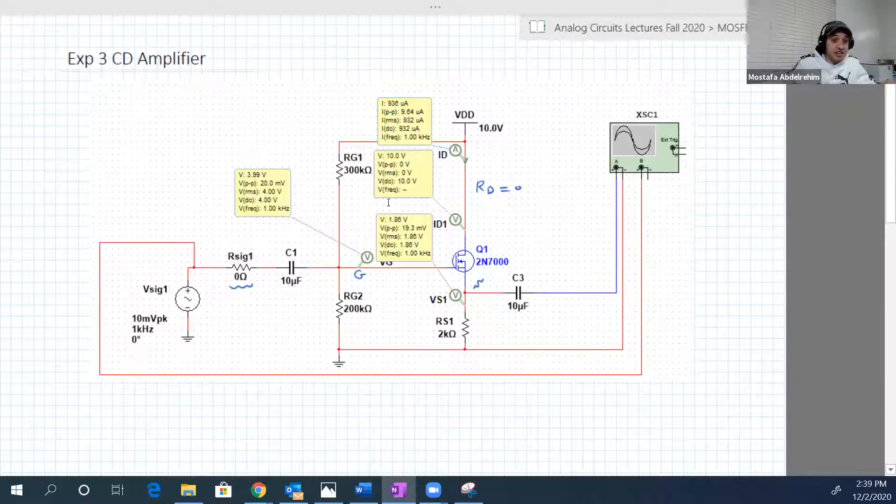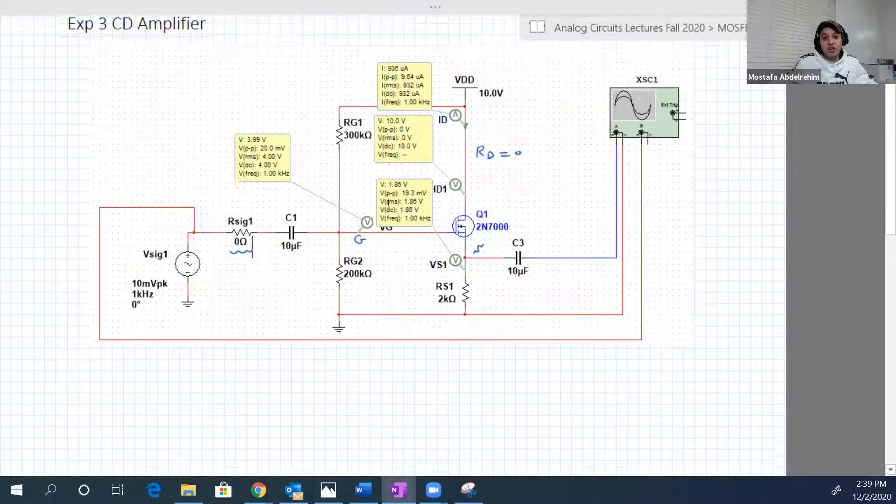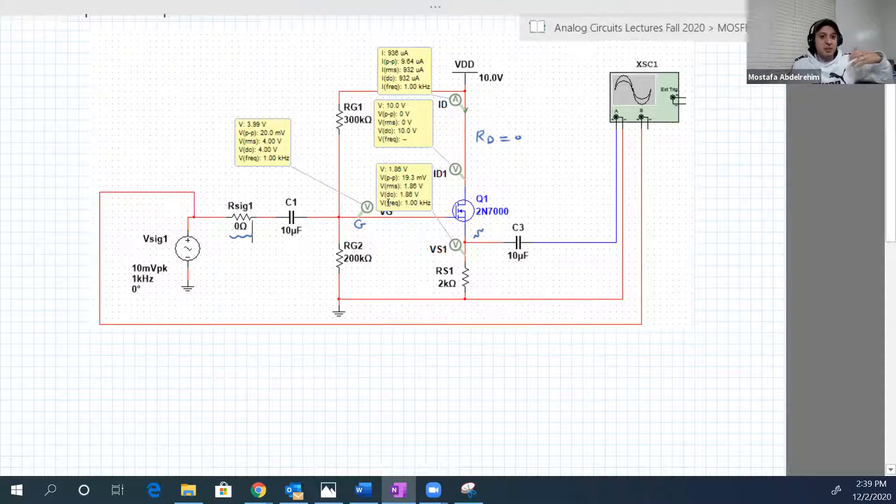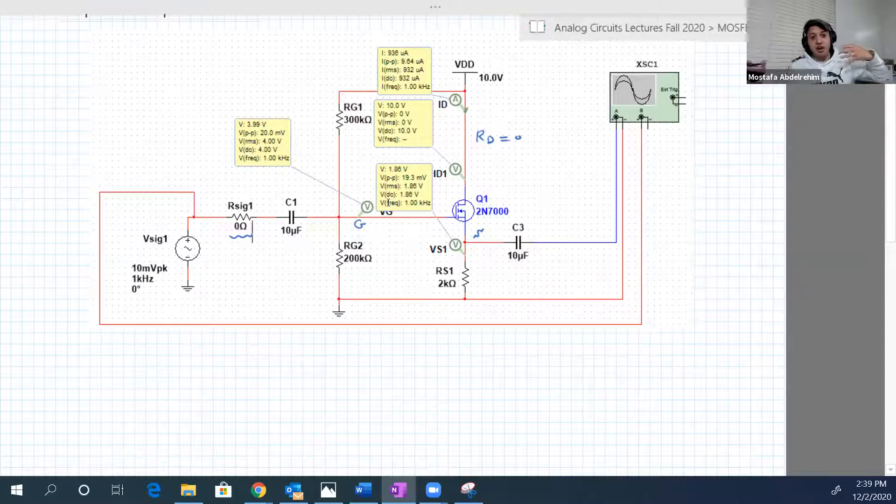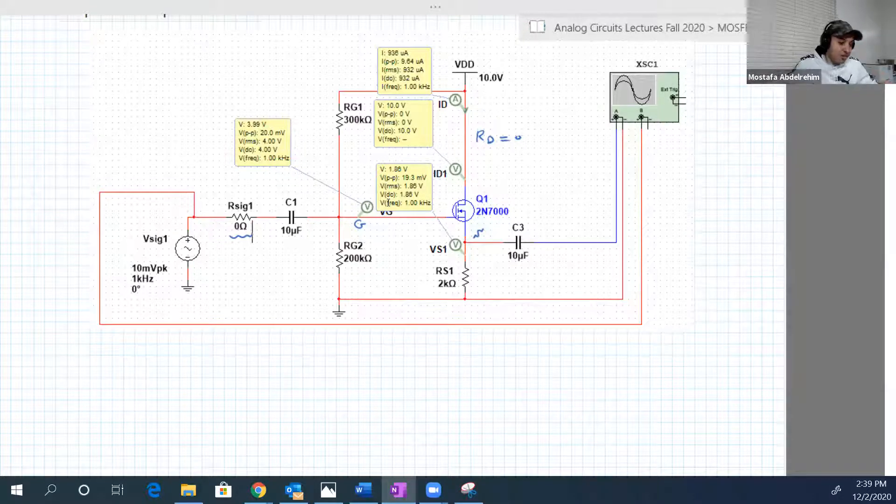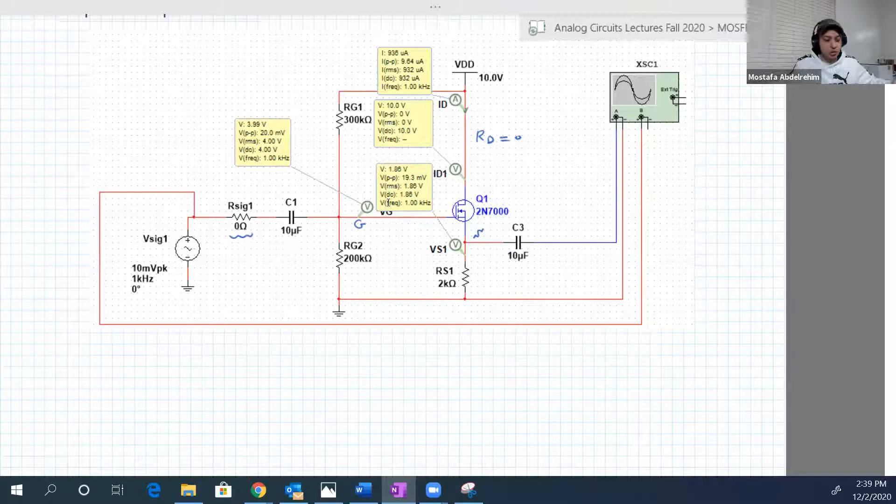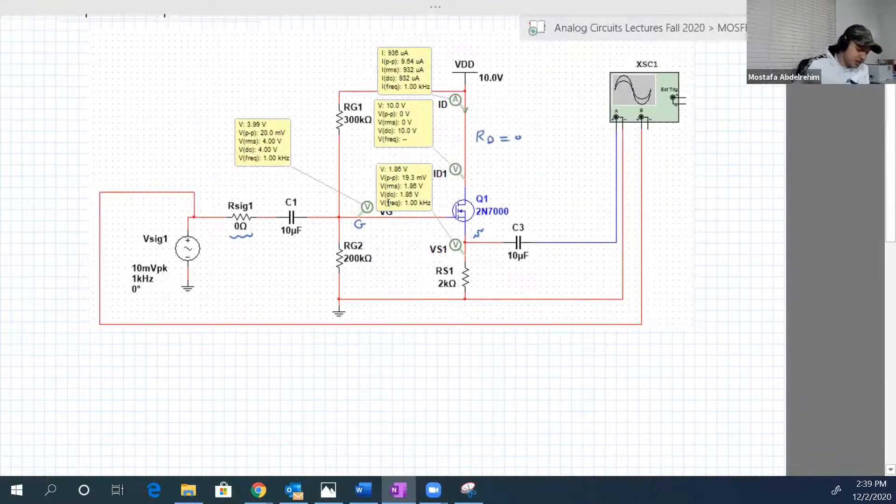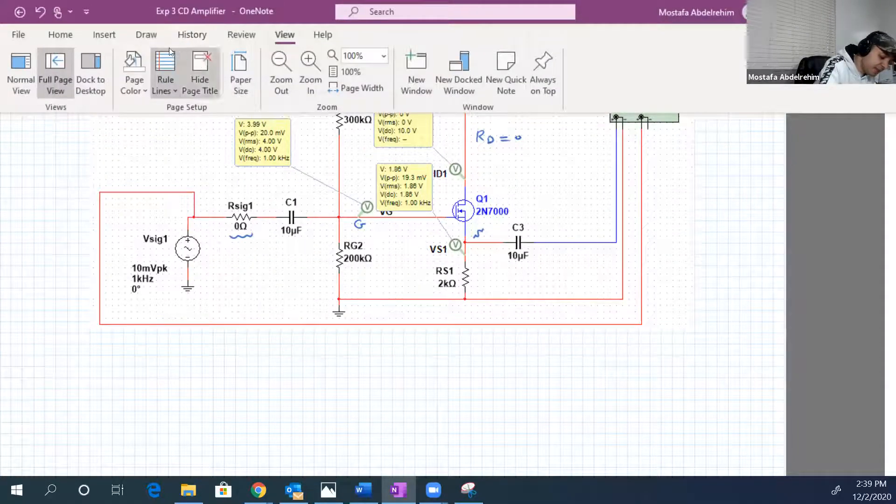So let's again analyze the circuit first, then go to the lab and implement it and see how much or how far our measurement is from our analysis. It should of course all the time be close, so let's start by the DC analysis.